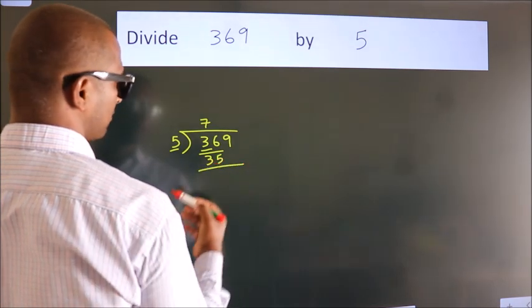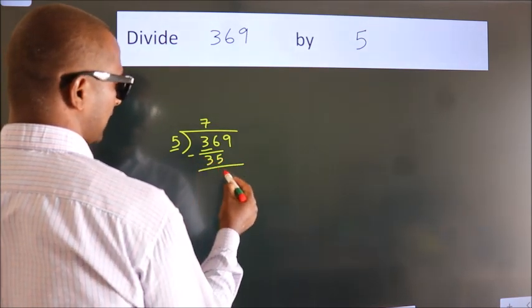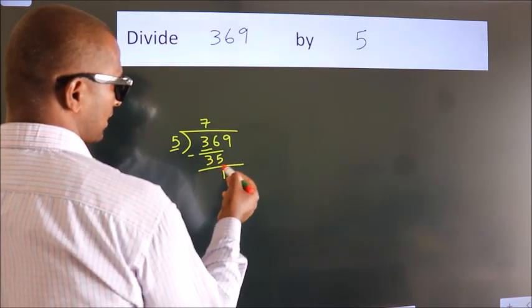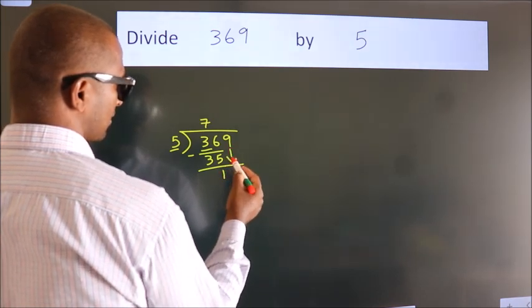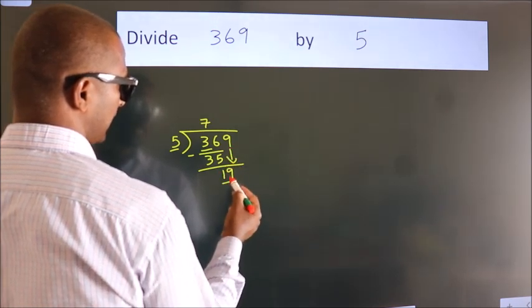Now we should subtract. We get 1. After this, bring down the beside number. So 9 down, which gives us 19.